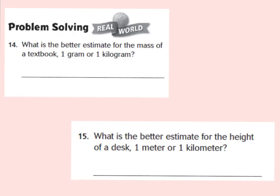Here are the problem solving questions in your GoMath book. Number 14: what is the better estimate for the mass of a textbook — one gram or one kilogram? Number 15: what is the better estimate for the height of a desk — one meter or one kilometer? The answer to number 14 is one kilogram, because a gram is about the mass of a dollar bill — very light. For number 15, one meter, because a kilometer is the distance you'd walk in 10 minutes, so a desk is about one meter tall.